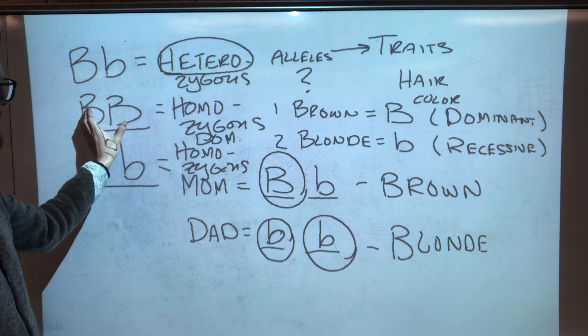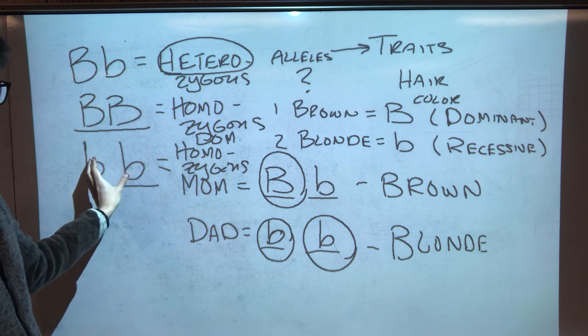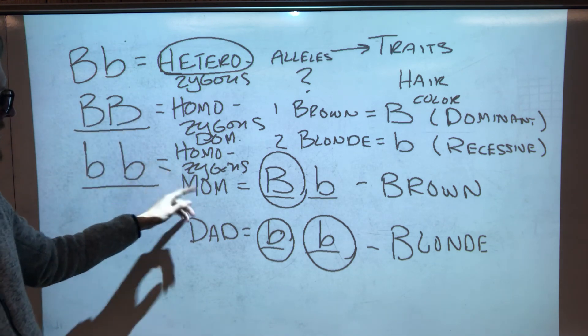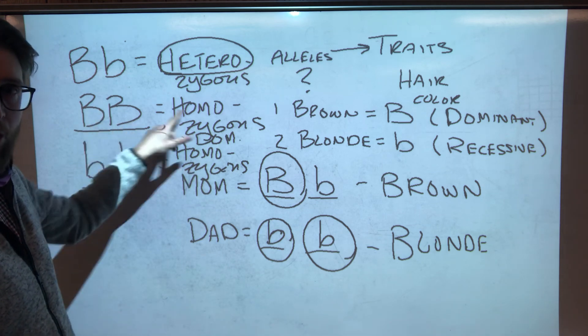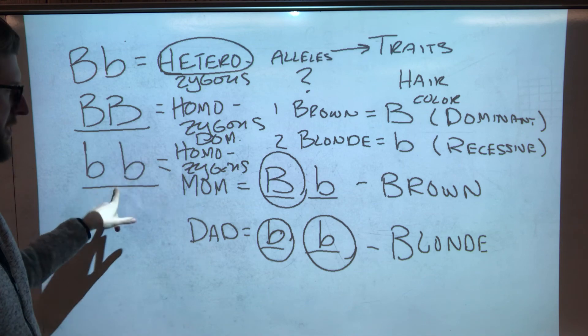Big B little B or big B's. Both big B. Both little B's. Both dominant or both recessive. They're both the same. These two are the same. These two are the same. Same means homozygous. But you have to indicate homozygous dominant or homozygous recessive.